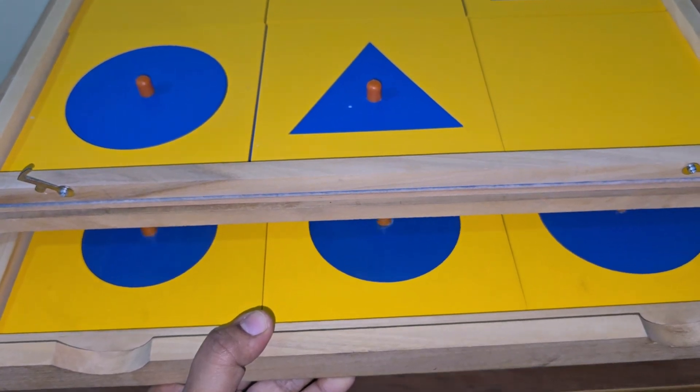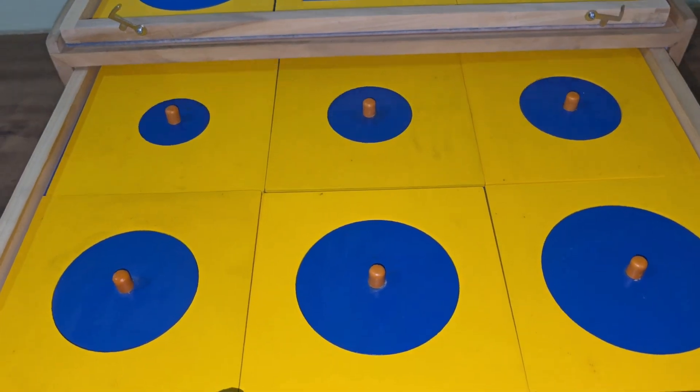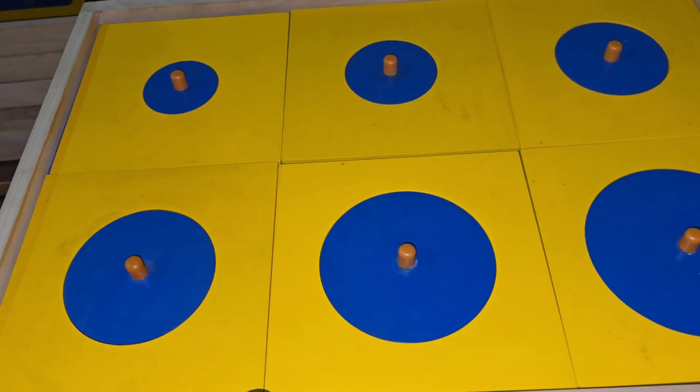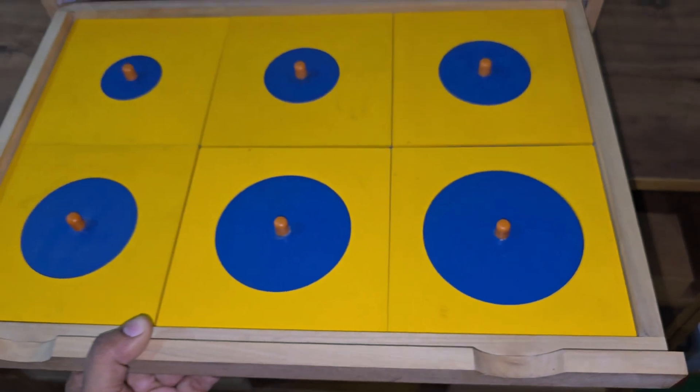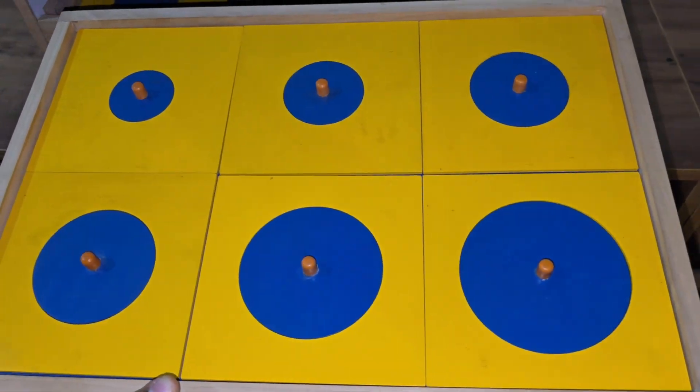There are six circles in the first drawer. Four to six circles with different diameters ranging from five centimeters to ten centimeters.